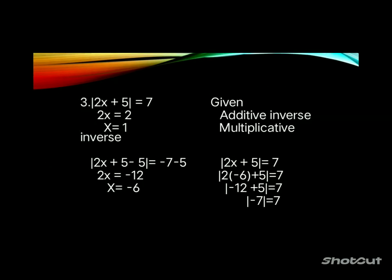Example 3: the absolute value of 2x plus 5 equals 7. Applying additive inverse gives 2x equals 2, so x equals 1. For the negative case: 2x plus 5 minus 5 equals negative 7 minus 5, giving 2x equals negative 12, so x equals negative 6.